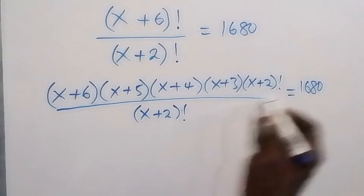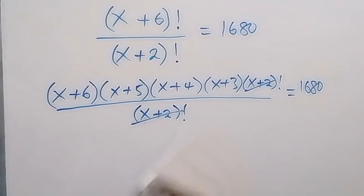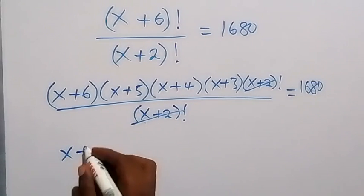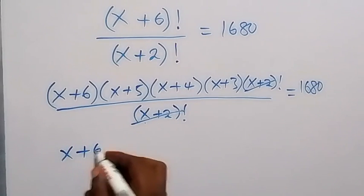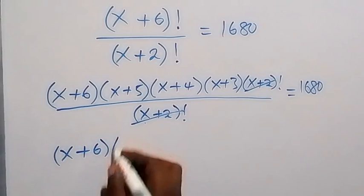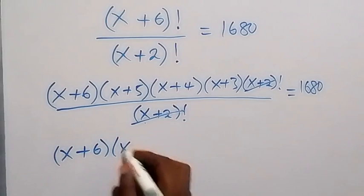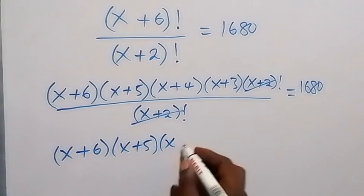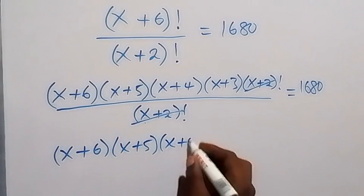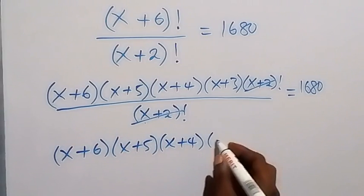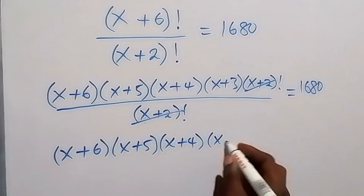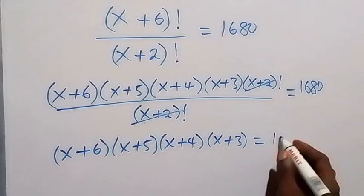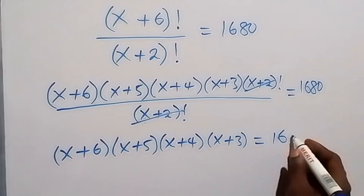From here the (x + 2)! cancels out, and we are left with (x + 6)(x + 5)(x + 4)(x + 3) = 1680.